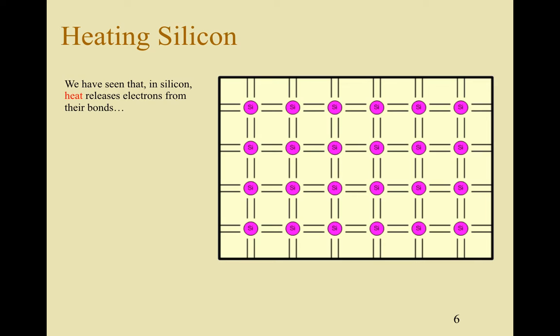So we've seen that in silicon heat releases electrons from the bond. This creates an electron hole pair. When the electron is removed it leaves behind a gap or a position where the electron previously was. We call that a hole. And what can happen is nearby electrons can fill that hole and as a result it appears that the hole is moving.